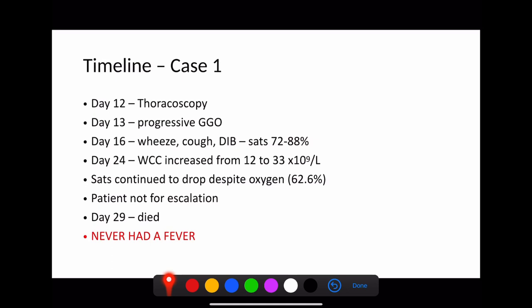So in terms of the time course for this patient, if they were diagnosed at day 1 and the CT was classed as being day 1, they had their thoracoscopy and lobectomy done on day 12. Day 13, so the day after the surgery, they did a repeat CT scan which showed progressive ground glass shadowing. However, the patient was completely asymptomatic and remained so for another 4 days. So it was only on day 16 after the initial CT scan did the patient start to develop a wheeze, cough and some difficulty in breathing and requiring supplemental oxygen. Now, this is the first key point that I want to point out. This patient had symptoms only 16 days after the initial CT scan showing evidence of inflammation.